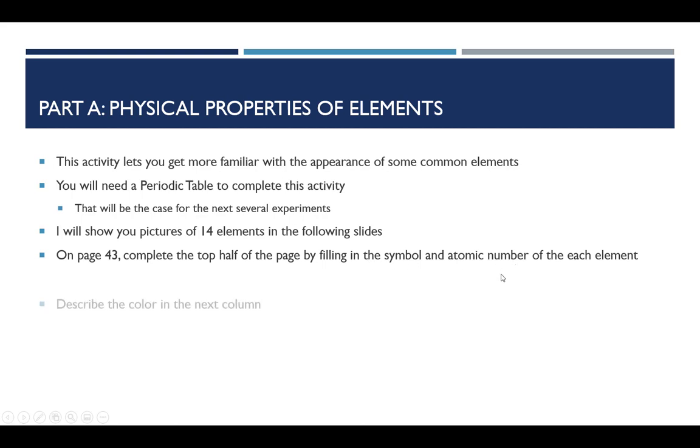So symbol, atomic number. And then in the next column over, you'll be asked to describe the color of the element as best as you can. Don't worry about being obsessive about this. Don't say it's burnt sienna with highlights of lavender or something like that. Just give a fairly simple color for that. And most importantly, if something has no color at all, we say it's colorless, not clear. So for example, water is colorless. And that is how we describe its color.